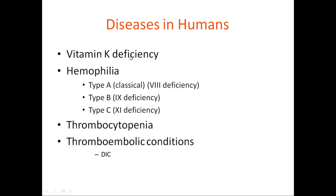Whenever there is vitamin K deficiency — we know that clotting factors 2, 7, 9, and 10 are vitamin K-dependent factors, and vitamin K is a fat-soluble vitamin — so whenever there is a deficiency of vitamin K in the diet or whenever there is liver disease, there is decreased secretion of bile. Because vitamin K is a fat-soluble vitamin, it requires fat for its absorption. When the liver is damaged, decreased bile secretion occurs, so deficiency of vitamin K results in decreased absorption, ultimately causing decreased production of clotting factors.